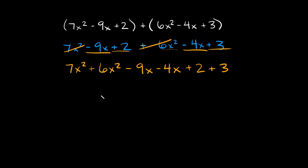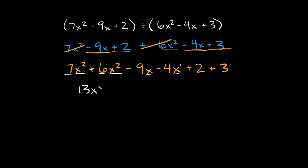One really important thing to realize is when you're combining like terms, make sure you have the same variable and the same exponent. That's why this x squared is matched up with this x squared, and this x to the first power is matched up with this x to the first power, and then these are just the numbers at the end. So now we can combine like terms. Starting right here: what is 7 plus 6? That's 13, and since we have x squared here and x squared here, you just keep the x squared.